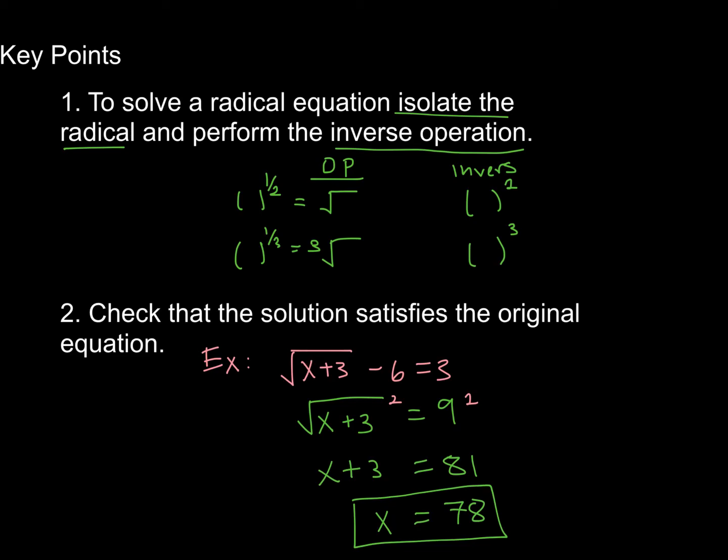Now I can go ahead and plug this back in, substitute it back in for x into my original equation. I will get the square root of 81, which is 9, minus 6, which is 3. And so it checks out.